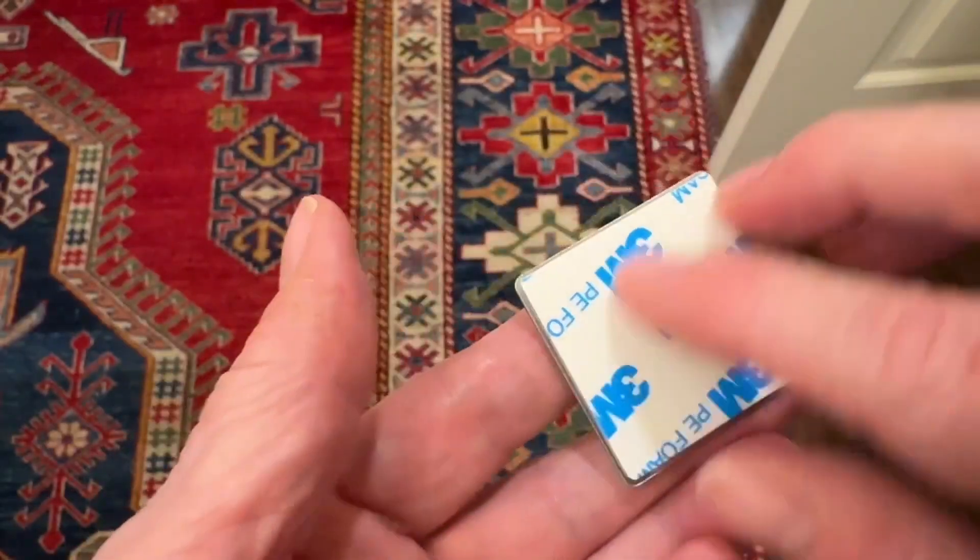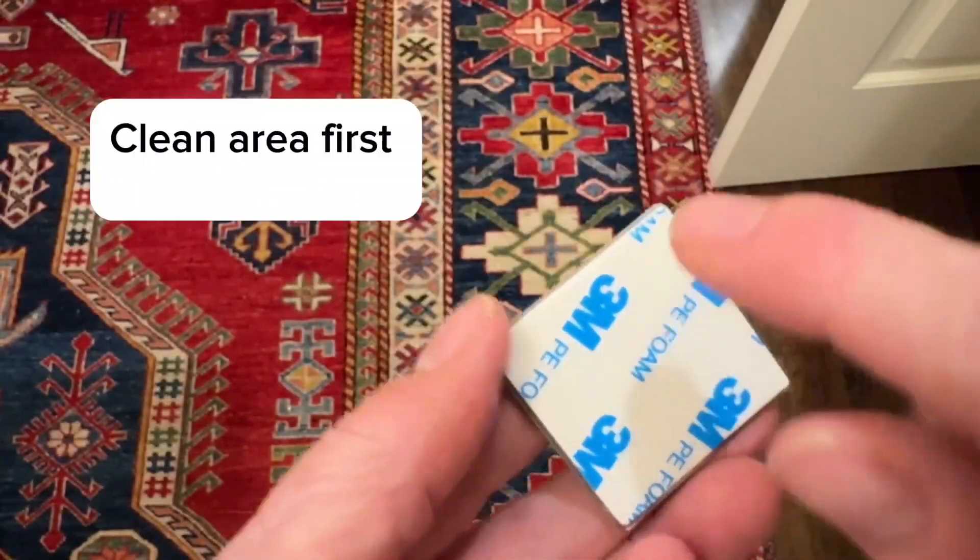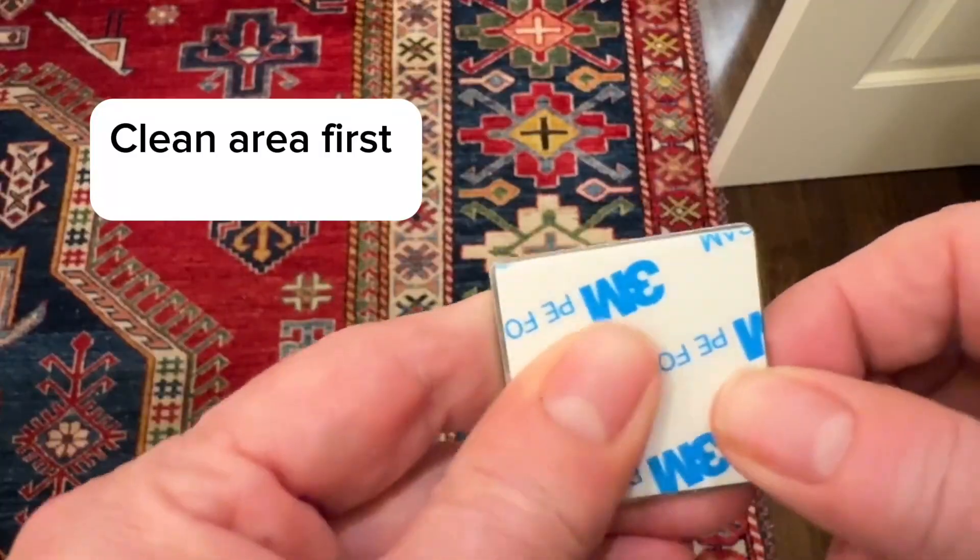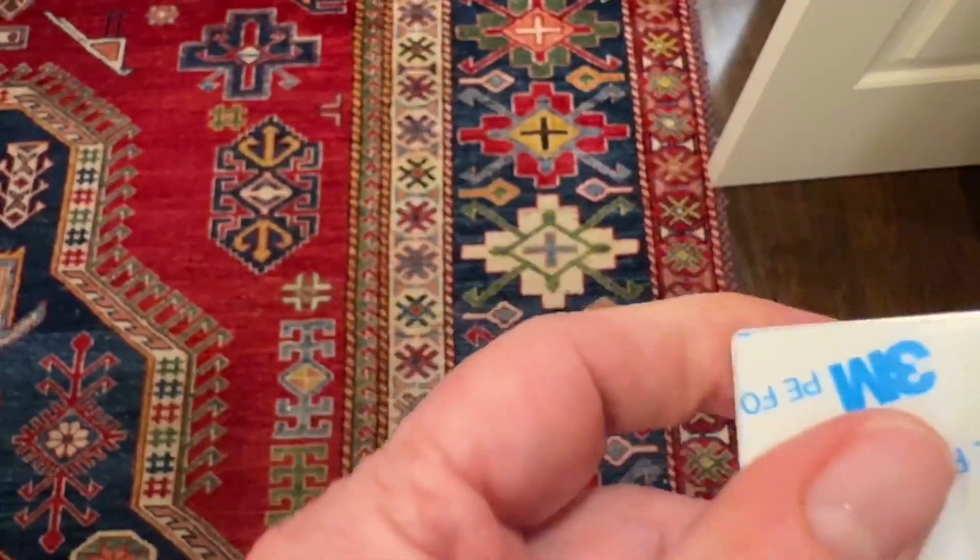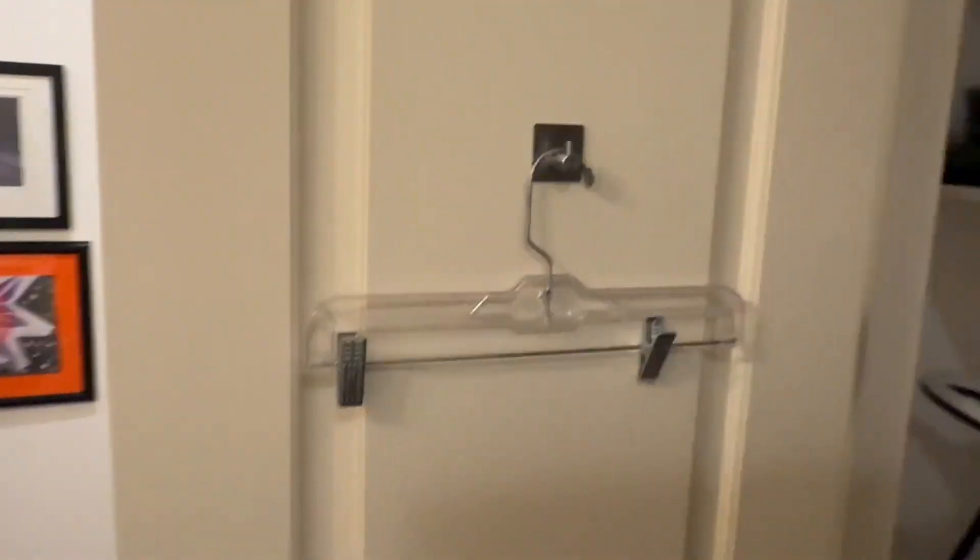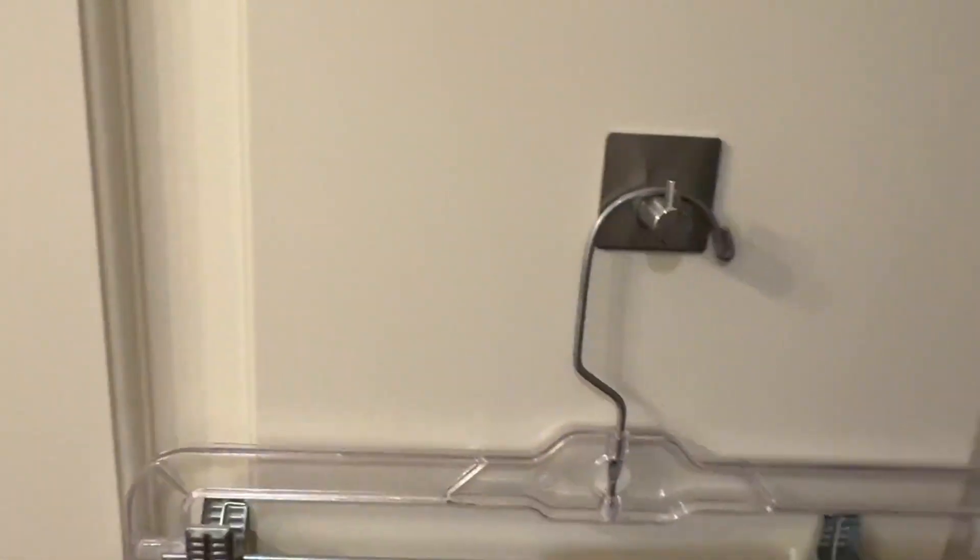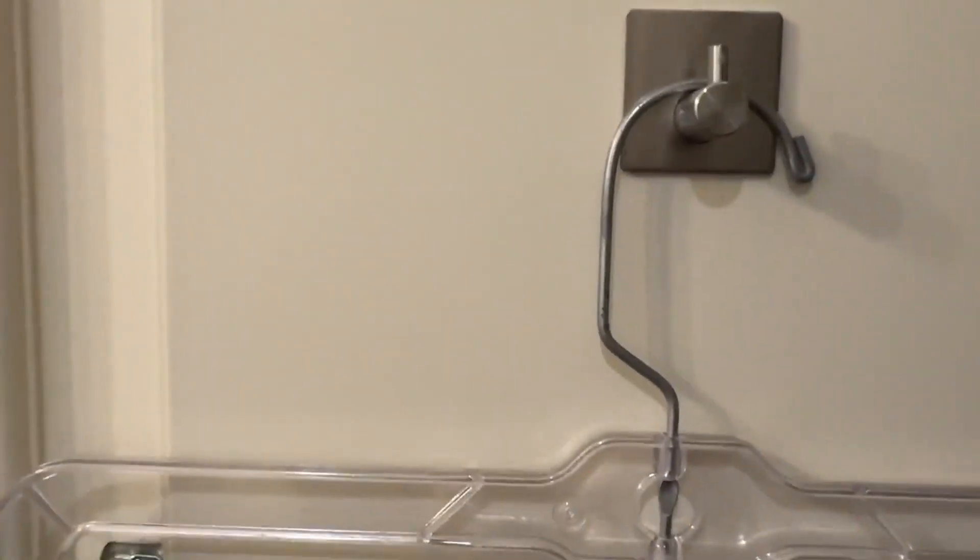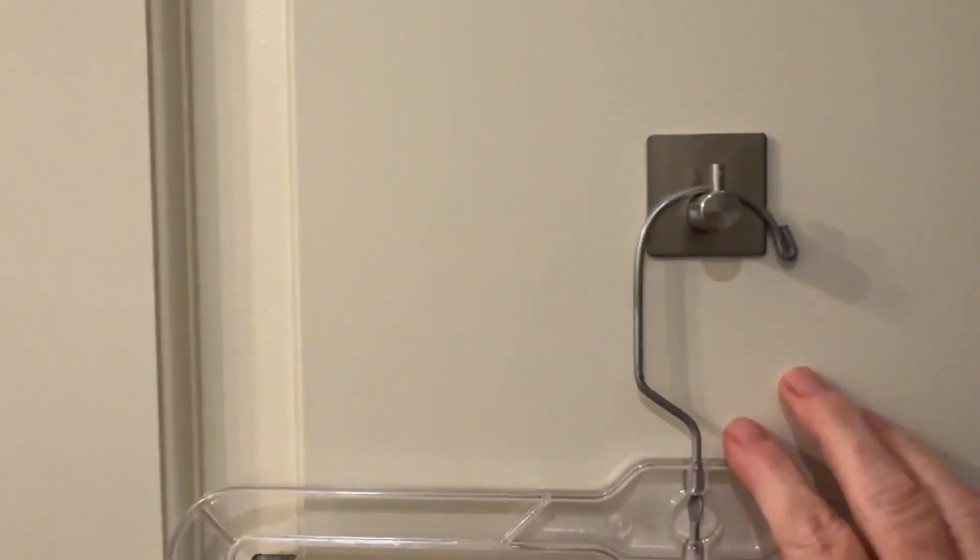You pull off this piece of paper that says 3M and there's a cushion pad on the back that has an adhesive on it, and you just put it up on the door just like that and press it. I would wait personally 24 hours before I'd hang anything on it.